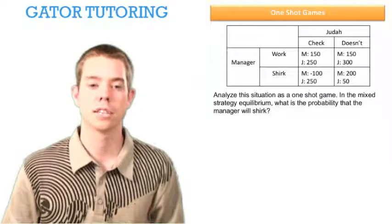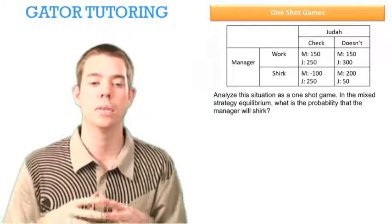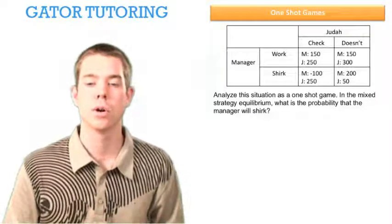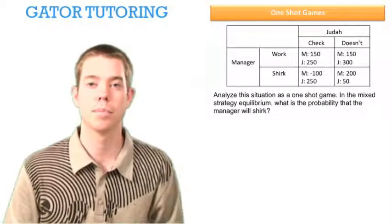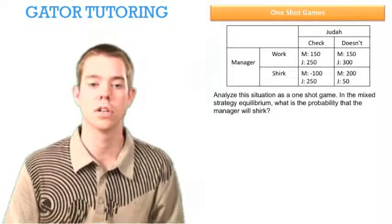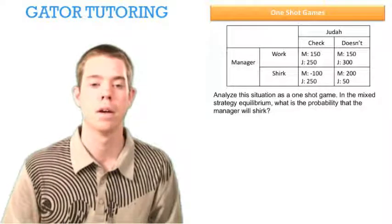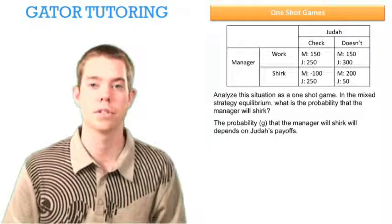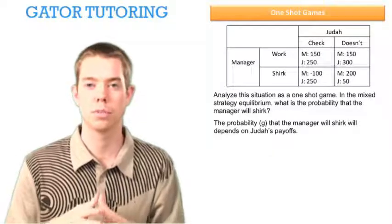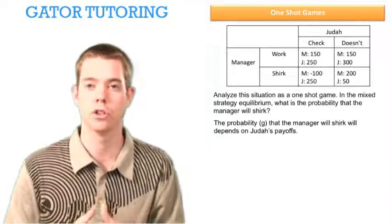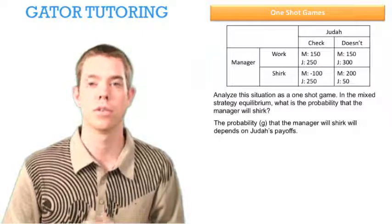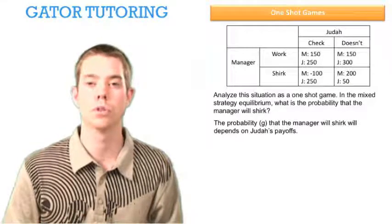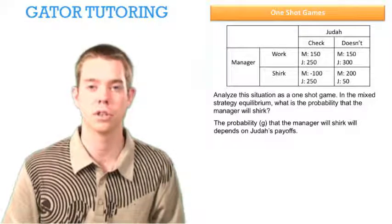So now let's analyze the situation as a one-shot game. In the mixed strategy Nash equilibrium, what is the probability that the manager will shirk? We don't have to actually solve for this in the problem set, but he says you do need to know how to solve for this. So let's take a look how we would. Well, the probability that the manager will shirk is going to depend on Judah's payoffs. So the manager, we're assuming in both these problems that both players know all this information, know all these payoffs. So that's kind of one of the main assumptions. So the manager knows what Judah's payoffs are and he can make this decision based on that.